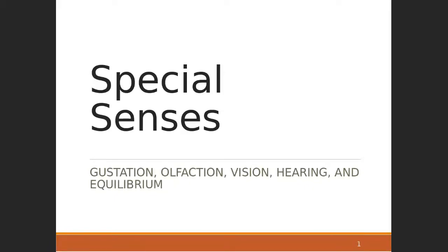We finally get to finish up the nervous system by discussing the special senses. All along we have mentioned some general senses — deep touch, light touch, pain, vibration — basically things that you can sense through the integument, changes in temperature. Special senses involve specialized structures and they're usually around the head and the face: smell, vision, hearing, and balance as it applies to the inner ear.